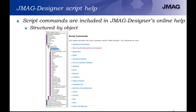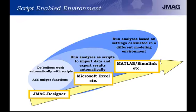JMAG Designer has a script help function structured by object. If you're recording a script and want to add functionality, examine the objects you can add. You can also build a script from scratch using the online help. In JMAG's script-enabled environment, scripting allows you to do tedious work automatically and add unique functions. In other programs such as Microsoft Excel, you can run an analysis via script, import data, and export results automatically. In MATLAB Simulink, you can set up a script to run analyses and perform optimization routines. There's a lot of flexibility and functionality with the scripting features in JMAG.